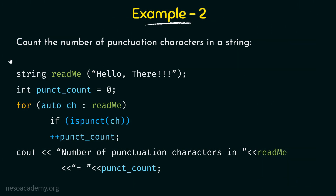In the second example, we want to count the number of punctuation characters in a string. We will use the isPunct function discussed in the previous lecture. We have a string called readme storing 'hello, there!!!' and an integer called punct_count initialized to zero, which will store the count of punctuation characters. We again use the range-for statement with auto and ch iterating over readme.